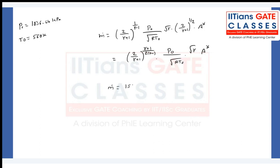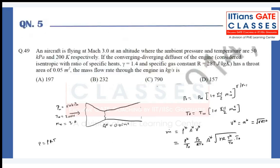So the mass flow rate is approximately 156.85 kg/s. If you look at the answer options, option D is the closest answer. This question was solved in the propulsion section too, but since it is more related to gas dynamics, I revisited it here.